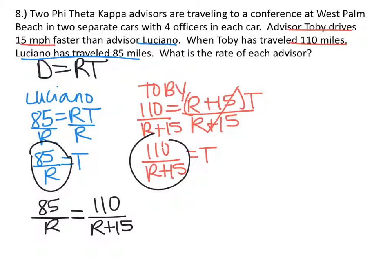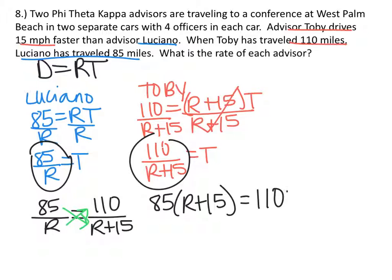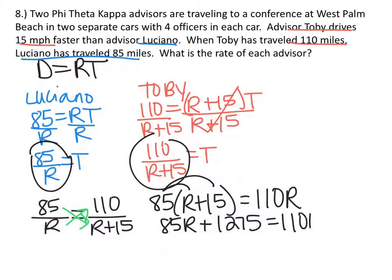To solve this, we're going to cross multiply. So we have 85 times (R plus 15) equals R times 110, which is 110R. Let's distribute the 85: we have 85R plus 85 times 15, which is 1275, equals 110R.